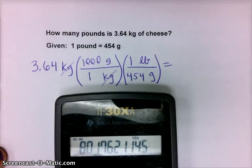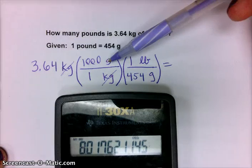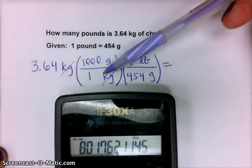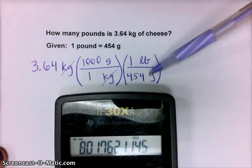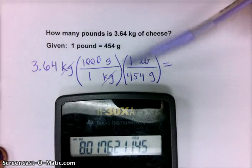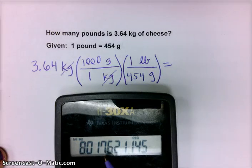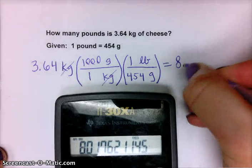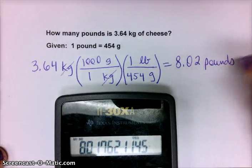How many sig figs? Well, we started with three. 1,000 grams per kilogram is a definition. That is exact. One pound has 454 grams, has three sig figs in it. So three sig figs it is. So 8.01 will be kept. Seven does make the one round up. So in fact, the answer is 8.02 pounds of cheese.